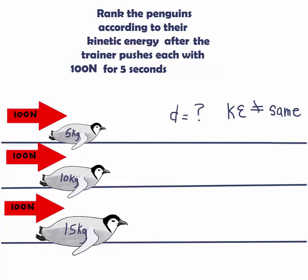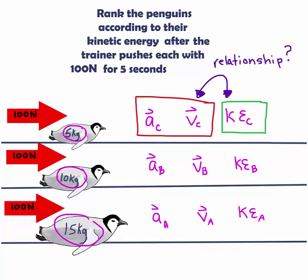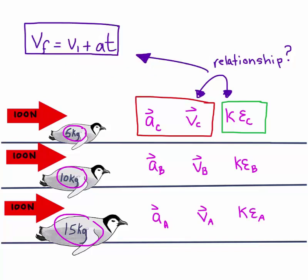Masses are also different, which means different accelerations, different final speeds, and different kinetic energies. We will need to somehow relate kinetic energy with kinematics. We are dealing with time here. So we can start with this kinematic equation. V final is equal to V initial plus acceleration times time.